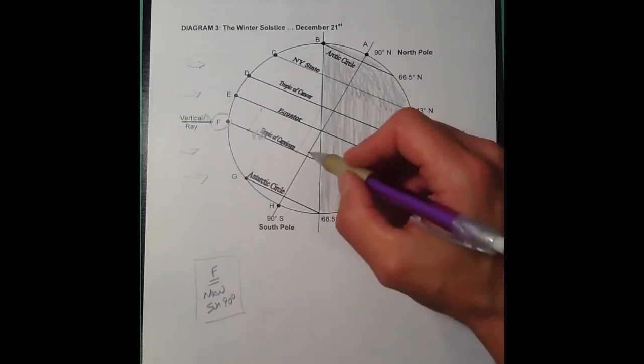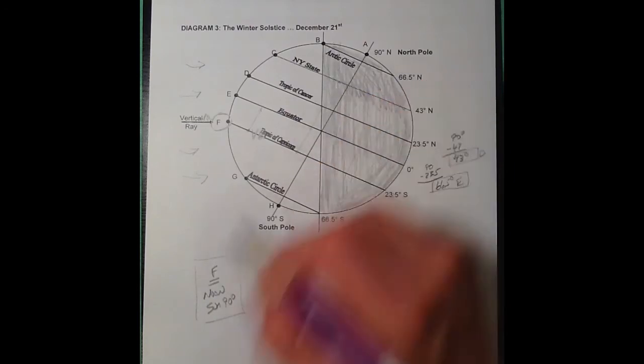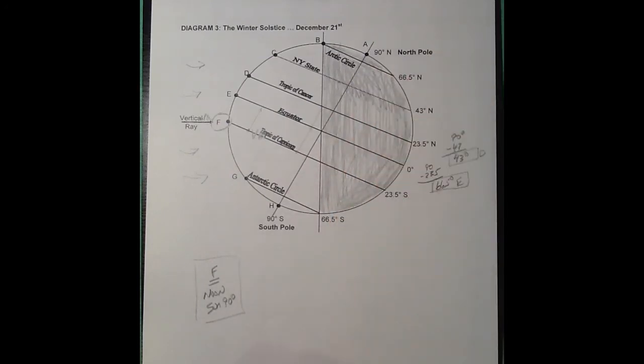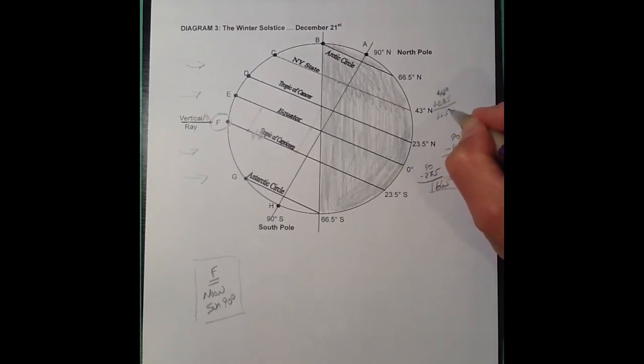Now, you're going from the Tropic of Capricorn all the way up to New York State. You're crossing the equator, so on opposite sides I'm going to have to add them. I'm going to do all the math here, so I do 43 plus the 23.5, and what happens is I have moved 66.5 degrees away from the vertical ray.